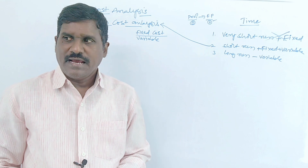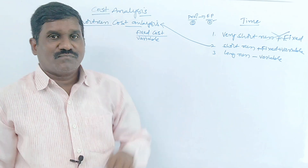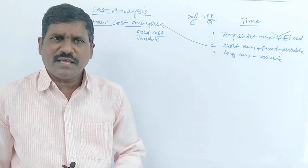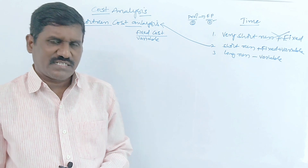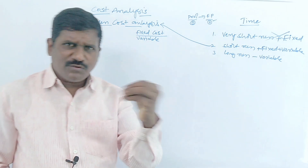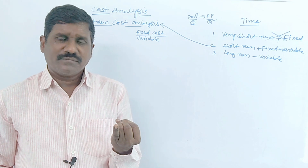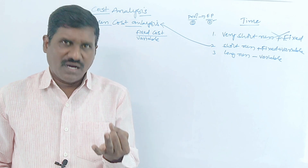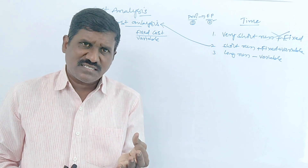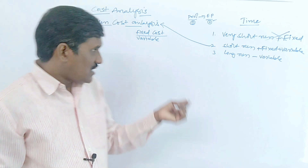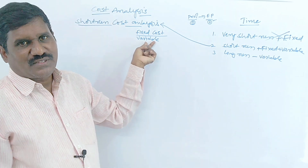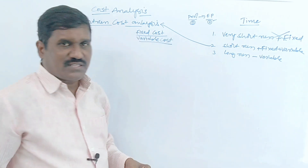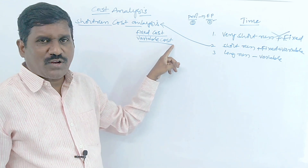On the other hand, expenditure on variable factors is called variable cost. For example, to produce goods and services, we need labor, raw materials, electricity charges, and transport charges — these are called variable costs.